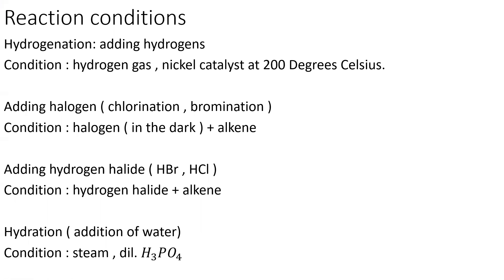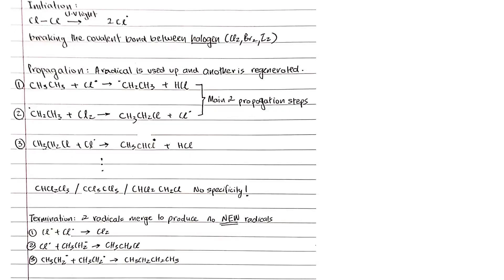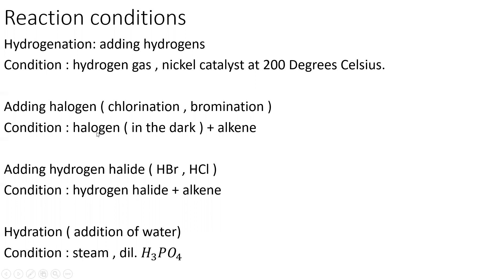For hydrogenation — adding hydrogen — the condition is hydrogen gas with a nickel catalyst at 200°C. For adding a halogen (chlorination or bromination), the condition is halogen in the dark. This distinguishes alkanes from alkenes, because alkanes react with halogens in the presence of UV light, while alkenes react without UV light. For adding hydrogen halide (HBr or HCl), the mechanism is electrophilic addition with just hydrogen halide and alkene. For addition of water (hydration) to produce an alcohol, the conditions are steam and dilute H3PO4.